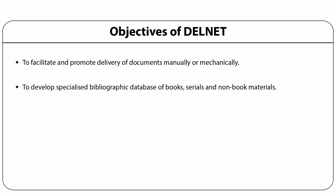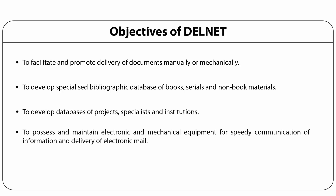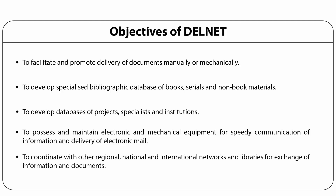DELNET develops databases of projects, specialists, and institutions, and processes and maintains electronic and mechanical equipment for speedy communication of information and delivery of electronic mail. DELNET also coordinates with other regional, national, and international networks and libraries for exchange of information and documents.